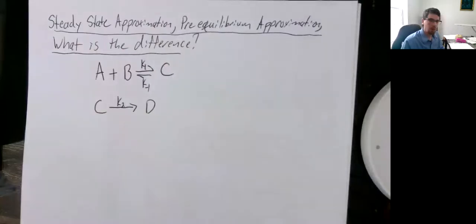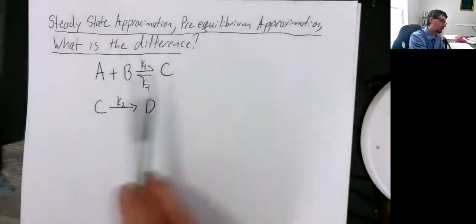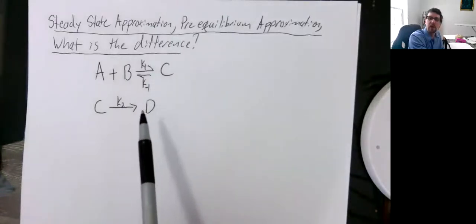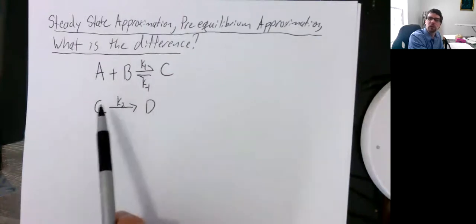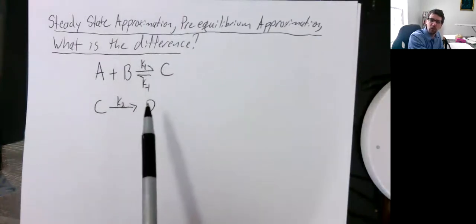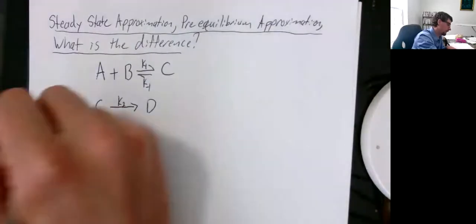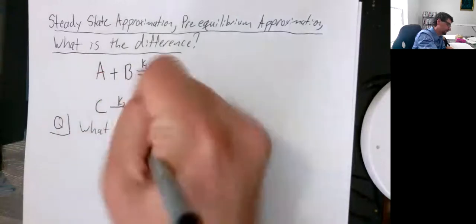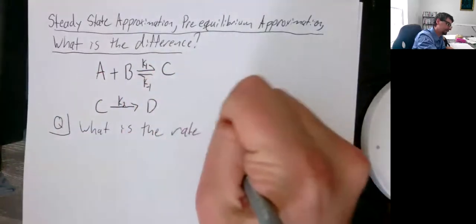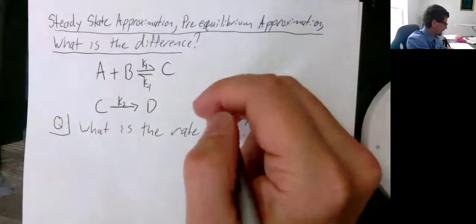So how do we determine a rate law based upon this? There's a couple different ways we could describe this rate law. We can pick any of the reactants or products to go with. C is not a good one to pick. Why isn't C a good one to pick? Well, C is technically an intermediate. How about we go with D?